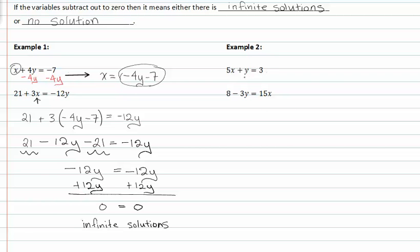In example two, I'm going to isolate y by subtracting 5x from both sides. This gives me y is equal to negative 5x plus three. Taking this value and substituting it in for y in the second equation gives me eight minus three times negative 5x plus three equals 15x.